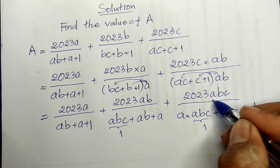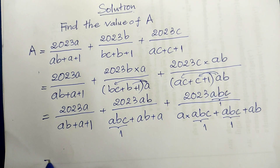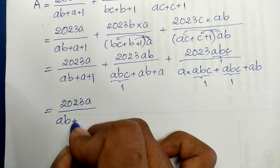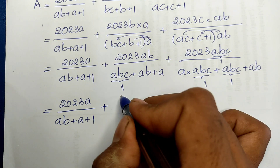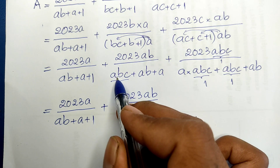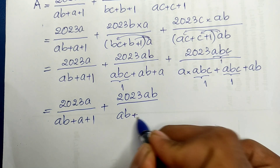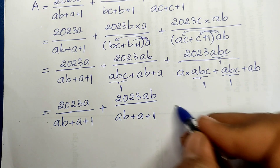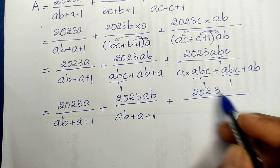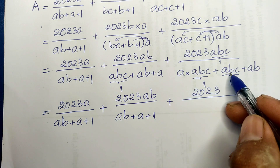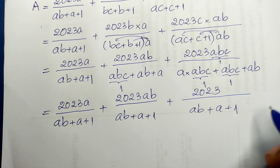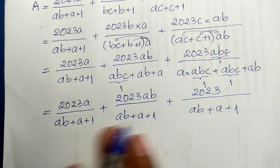Since abc = 1 throughout, I replace abc with 1. So the second fraction becomes 2023·ab divided by (1 + a + ab), which we can write as (ab + a + 1). The third fraction becomes 2023·abc = 2023·1 = 2023, divided by (ab + a + 1). So the denominators are all the same.